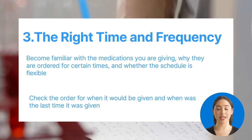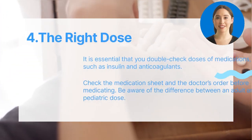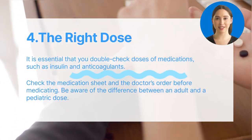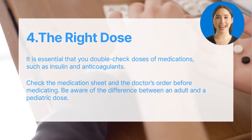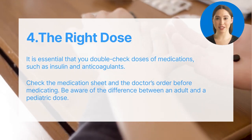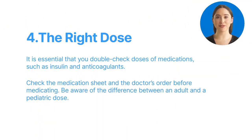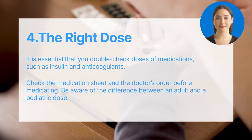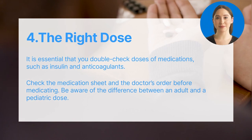Check the order for when it would be given and when was the last time it was given. It is essential that you double-check doses of medications, such as insulin and anticoagulants. Check the medication sheet and the doctor's order before medicating. Be aware of the difference between an adult and a pediatric dose.